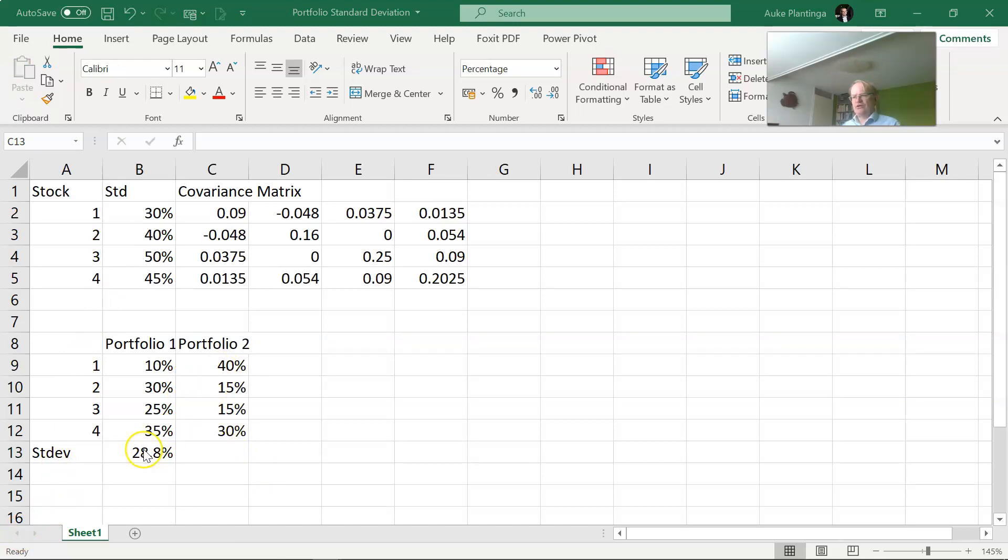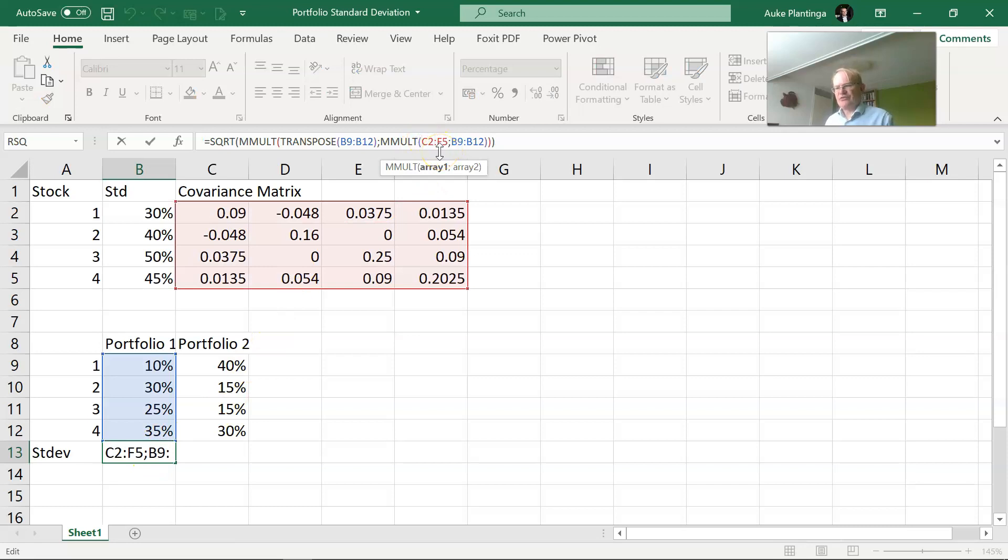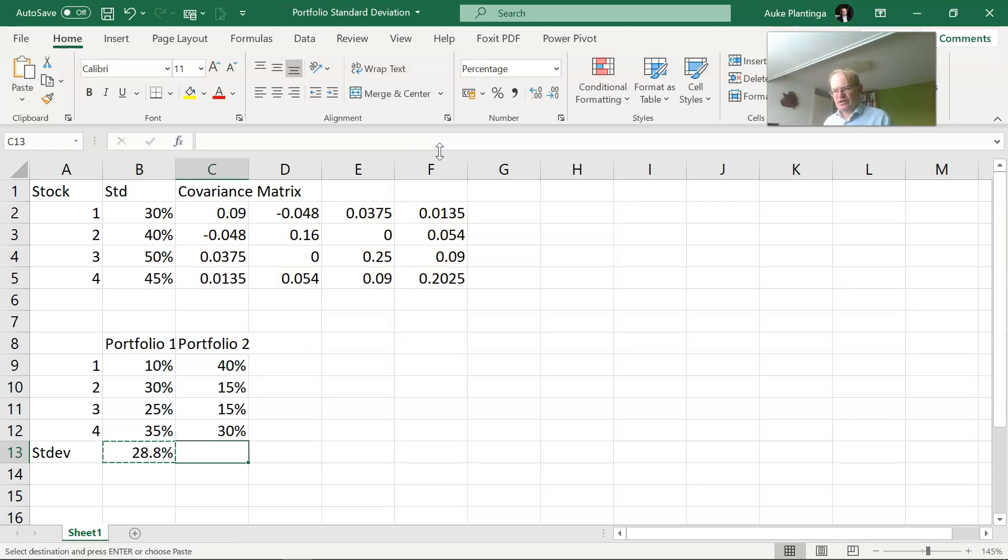If you want to do this analysis for a second portfolio you could drag the formula over here but then you need to be careful with putting the dollar sign for fixing the references to cells. If you want to do the calculations for portfolio 2 with exactly the same covariance matrix as portfolio 1, you need to put the dollar signs. Then you can essentially drag it and you see we get a portfolio with an even much lower standard deviation.